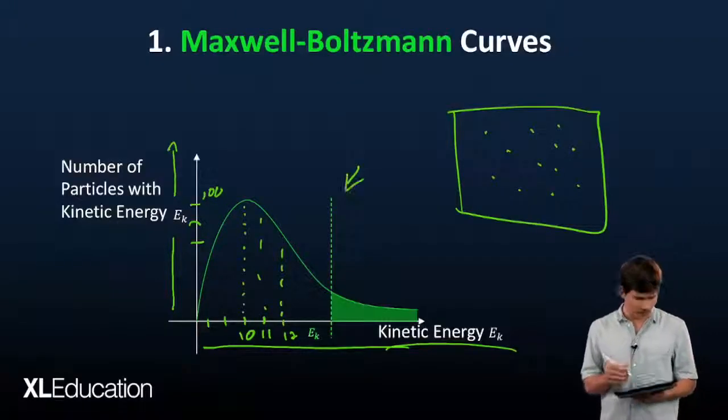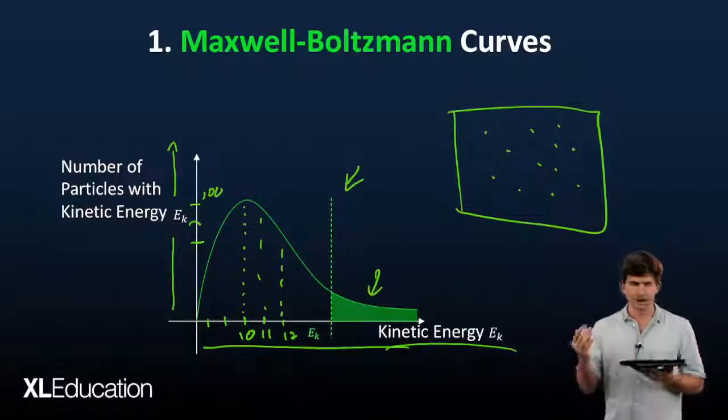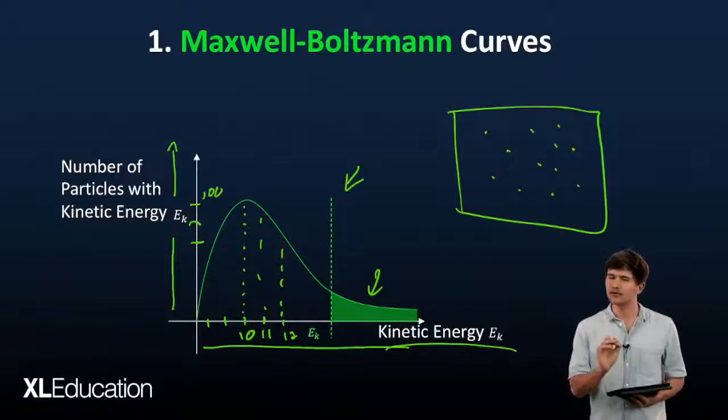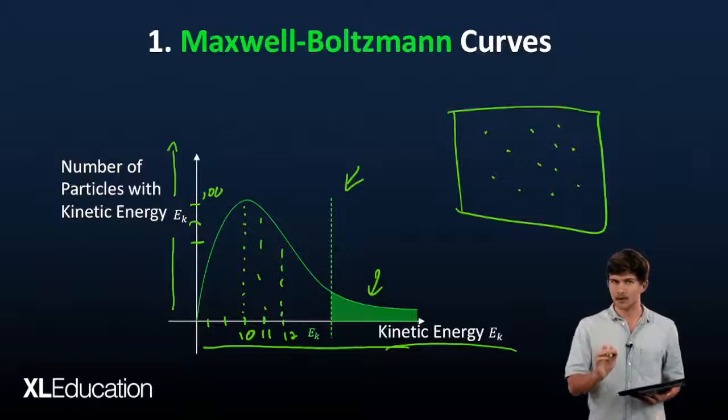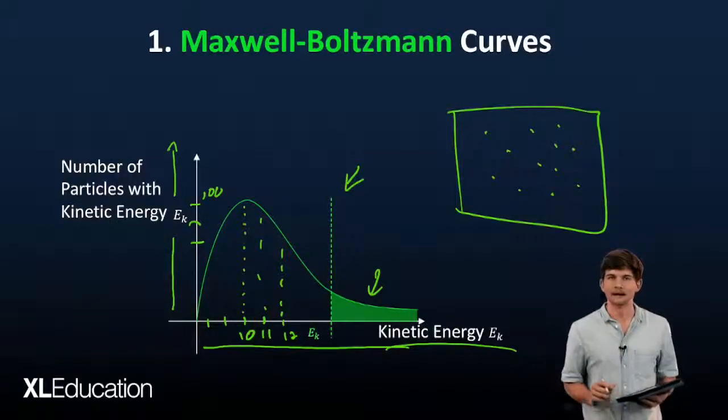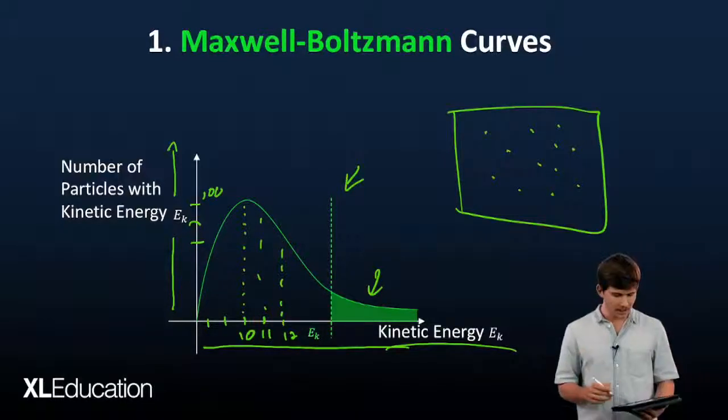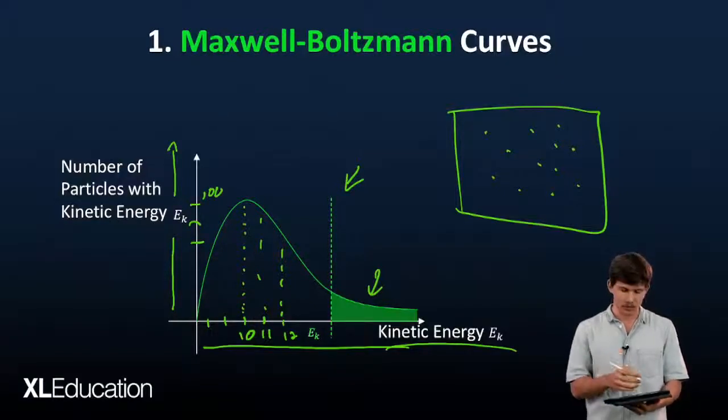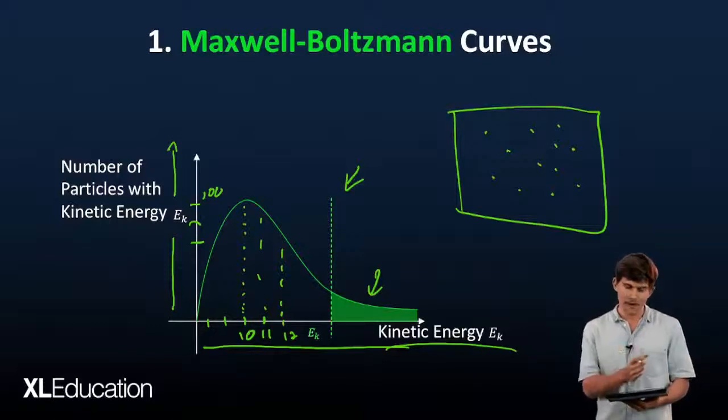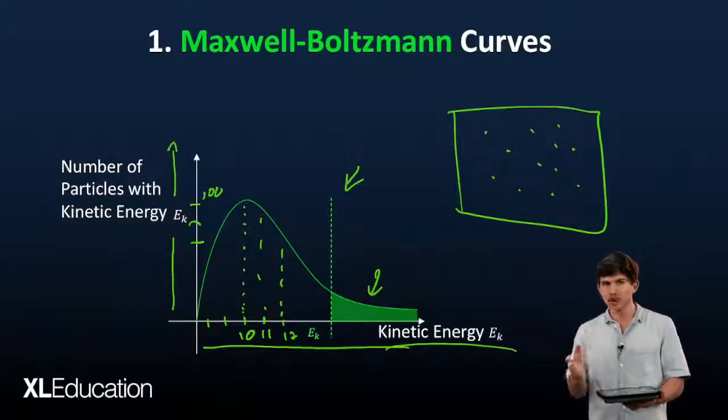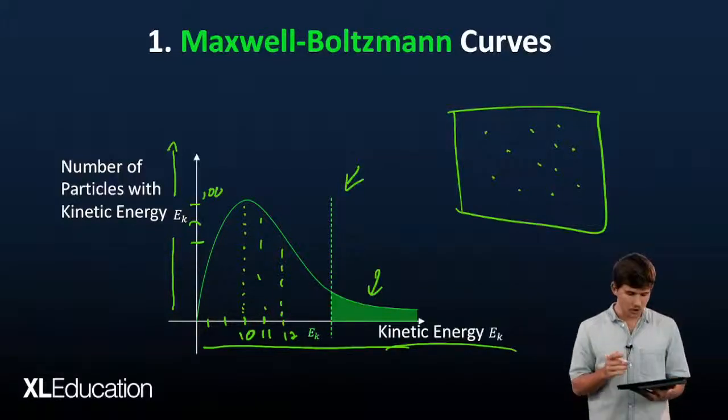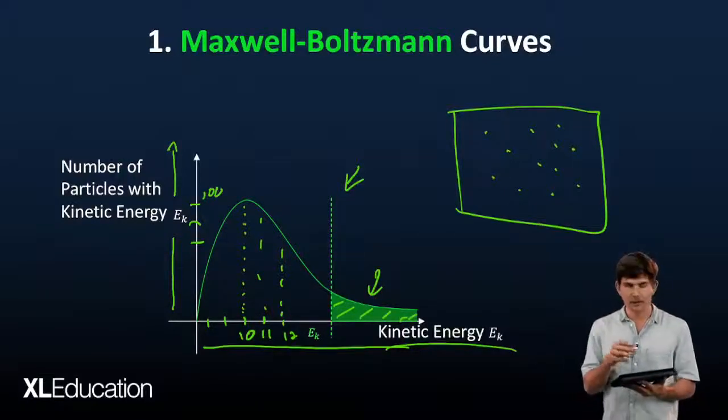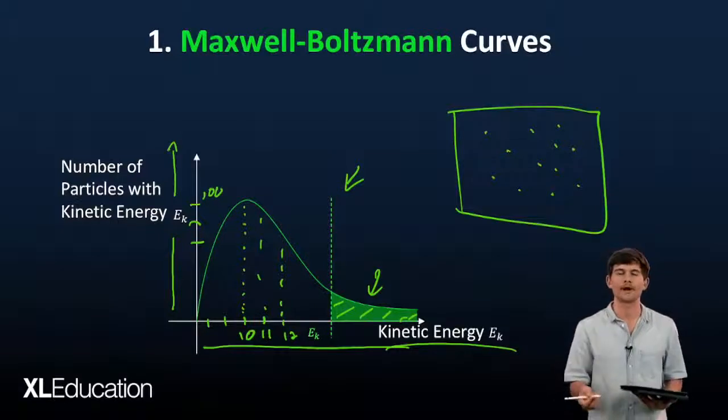Now there's this dotted line and filled-in area. What does that mean? That dotted line represents a very specific number. With rates of reaction in mind, we need sufficient energy for an effective collision. The Maxwell-Boltzmann Curve shows us this. The shaded-in area means this is the amount of particles that have sufficient energy to create an effective collision.